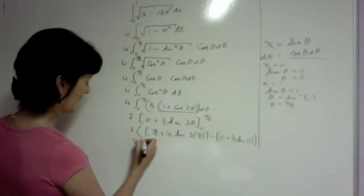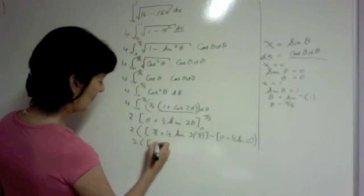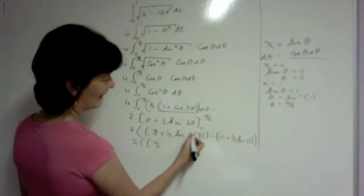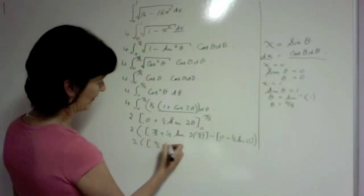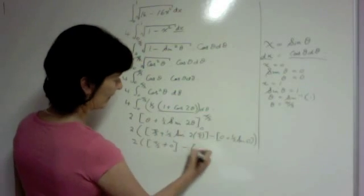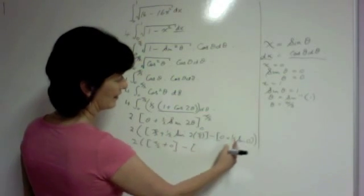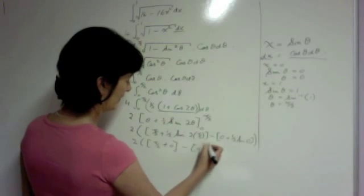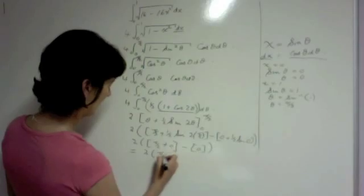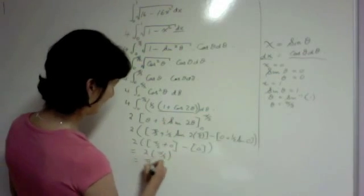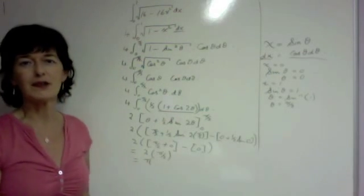And that gives us 2 times pi over 2. 2 times pi over 2 is pi. Sine of pi is 0. Half times 0 is 0. Sine of 0 is 0. So all we have to do is 2 times pi over 2, which is pi. And that's our integration. Thank you.